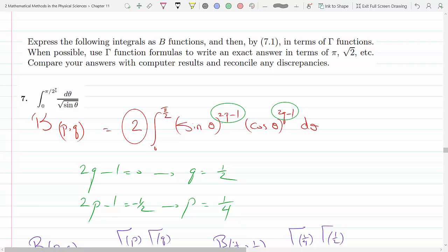This is problem number 7, section 11.7. It says express the following integrals as beta functions, then use equation 7.1 to express it in terms of the gamma functions when possible. I'm doing number 7.